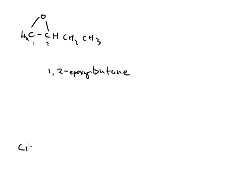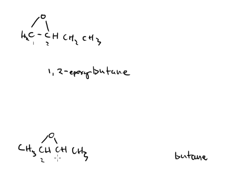Let's do another example: CH₃-CH-CH-CH₃ with an oxygen forming the epoxide between the middle two carbons. Longest carbon chain is four — butane. On carbons 2 and 3, that is where the epoxide group is formed. So this is called 2,3-epoxybutane. That's all we have to do to name epoxides — these are IUPAC names.